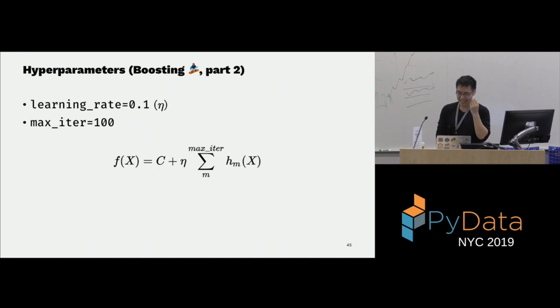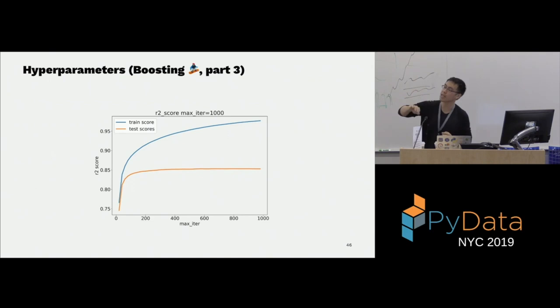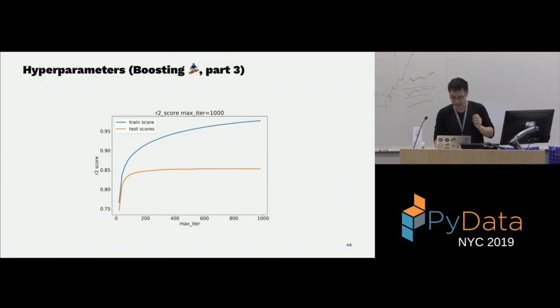Looking at a graph: the X-axis is max_iter — how many trees you have — and the Y-axis is R² score. You see that the training score increases monotonically, while the test score flattens out, which is what you expect. At some point you add more trees and it does nothing to your test set.